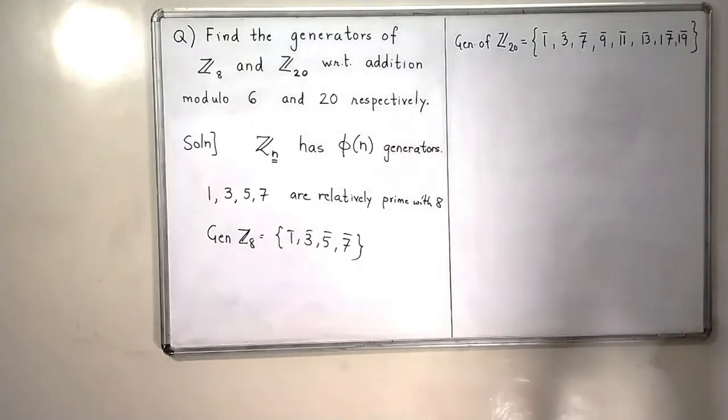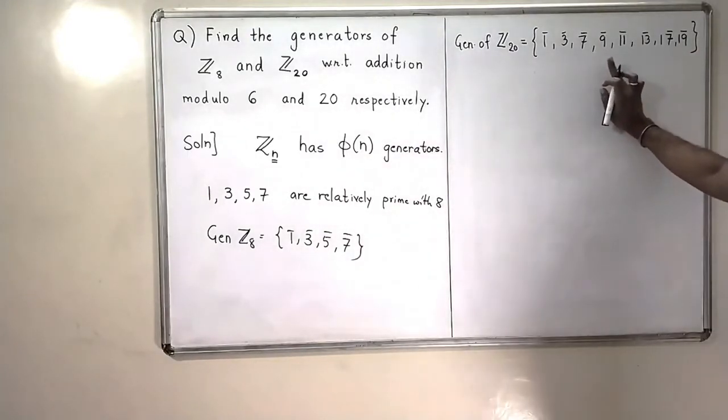These are the generators of the set Z20. With this, the problem is finished.